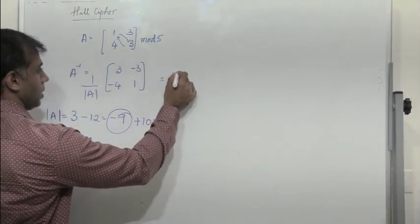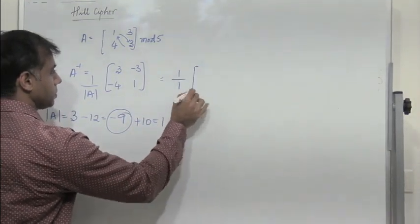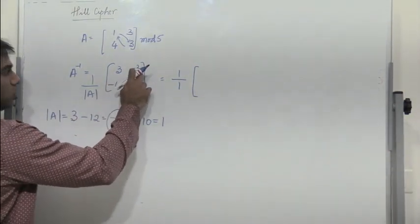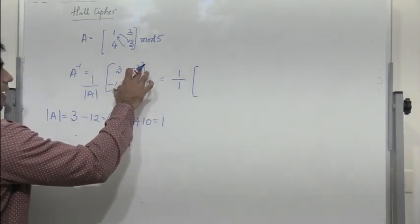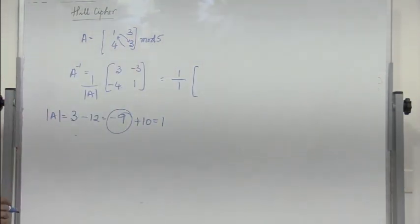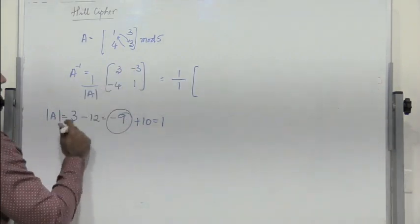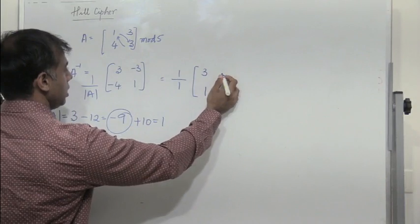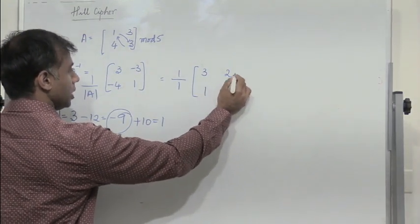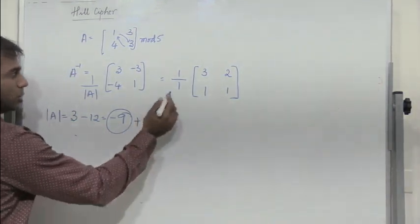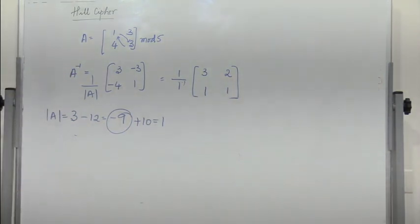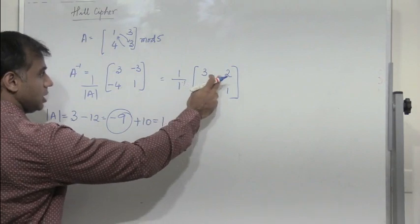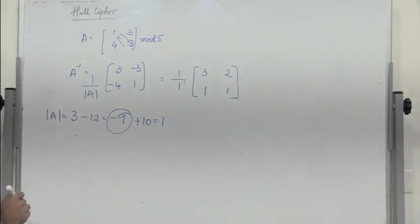With det(A) = 1, we have 1/1. The off-diagonal elements −4 and −3 in mod 5 become 1 and 2 respectively (by adding 5). So A⁻¹ = [[3, 2], [1, 1]] in mod 5.